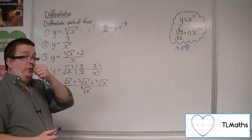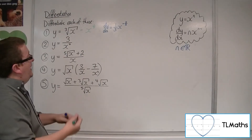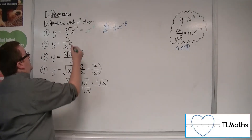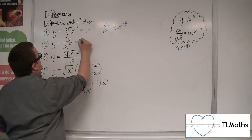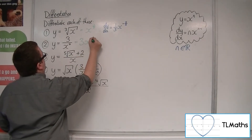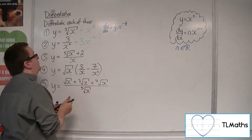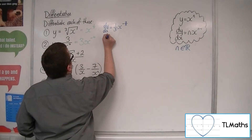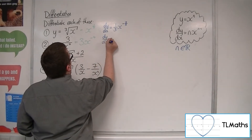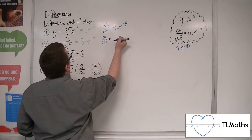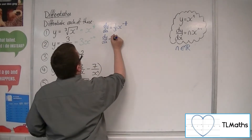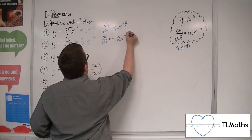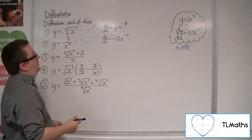For number two, we want to write this as something times x to the something. So we've got three x to the minus four. Now we can differentiate. dy/dx: the minus four multiplies with the three, giving minus 12x, and then take one from the power, so minus five.